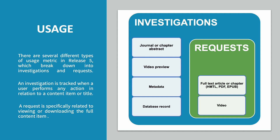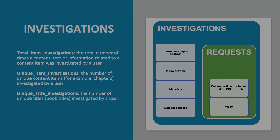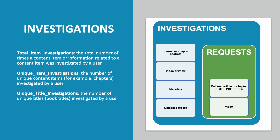A request is specifically related to viewing or downloading the full content item, as you can see on the diagram on the right of this slide. There are three investigation metrics. Total item investigations reflects the total number of times a content item, or information related to a content item, was accessed. Unique item investigations shows the number of unique content items, such as chapters or articles, investigated by a user. And unique title investigations shows the number of unique book titles investigated by a user.